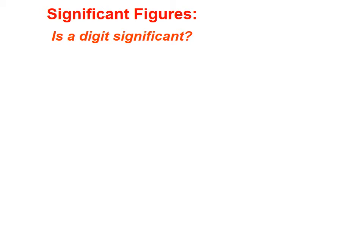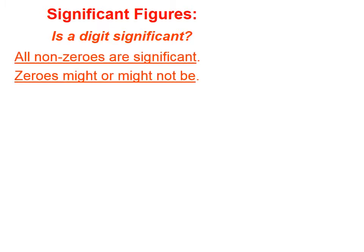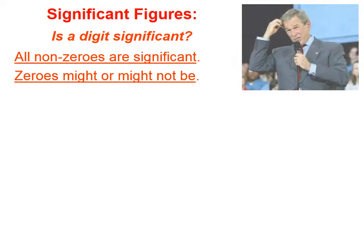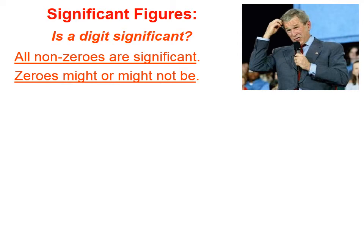Every measured quantity has significant figures. Some measured quantities have additional zeros that are not significant, so we need to count significant figures and tell which figures are significant and which ones aren't. All non-zeros are significant. Zeros might be or they might not be. So if you have a measurement, any non-zero is definitely significant, and then we have to decide whether the zeros are or aren't.